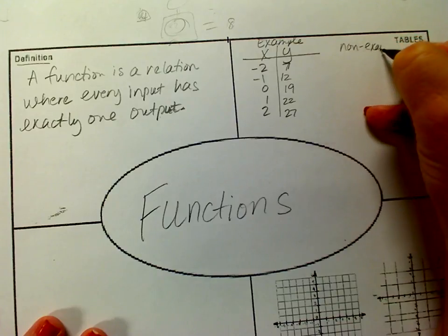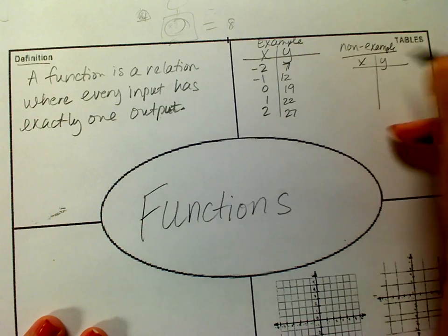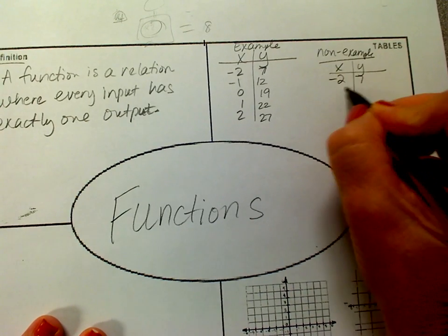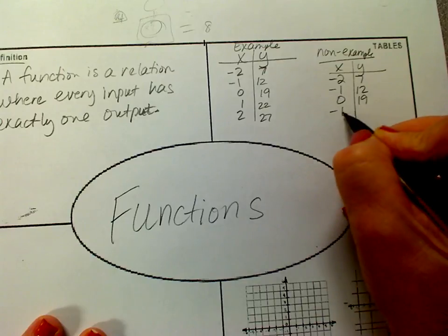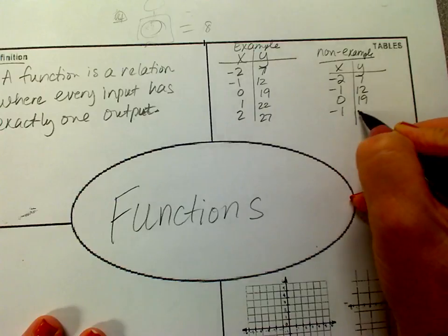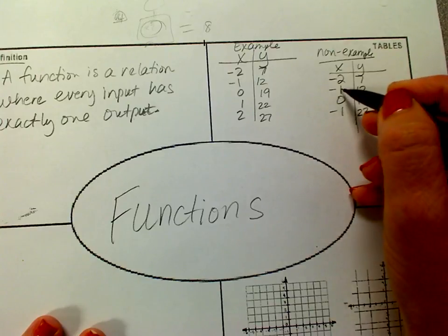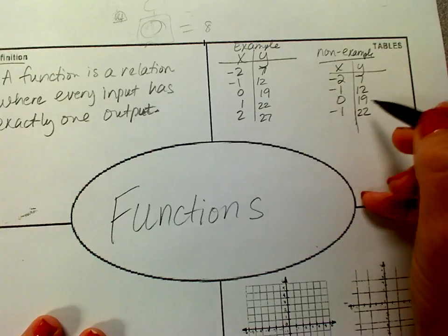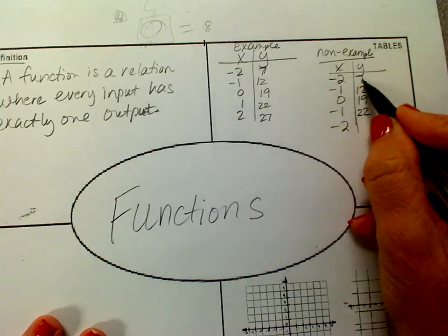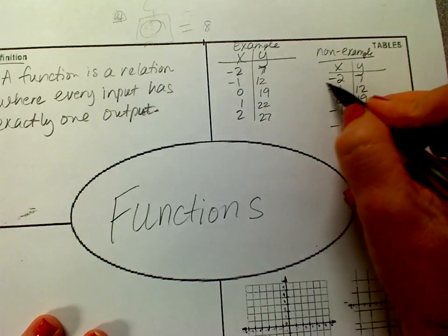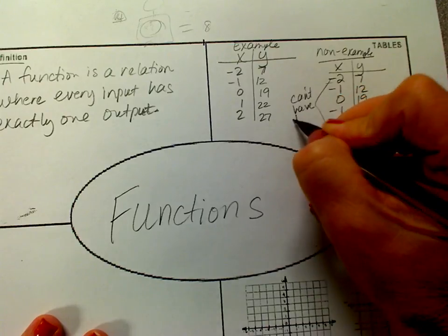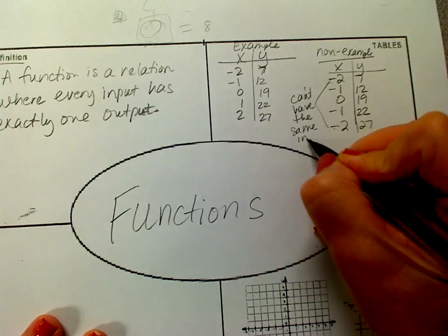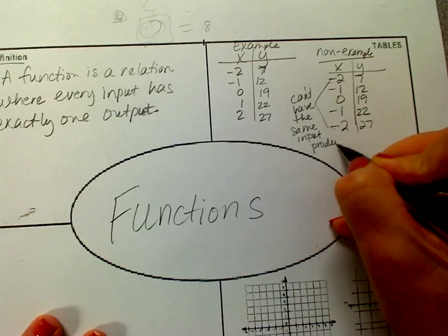Now a non-example in table format would be something like this. If we had negative 2 giving 7, negative 1 giving 12 — that's okay. But let's say negative 1 goes in and gets 12 the first time, and then negative 1 goes in but 22 comes out. That is not a function, because negative 1 is the same input but producing two different outputs. You do not want your x values to repeat — you can't have the same input produce two different outputs.